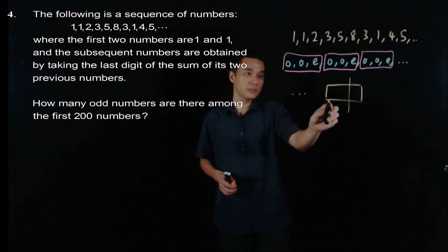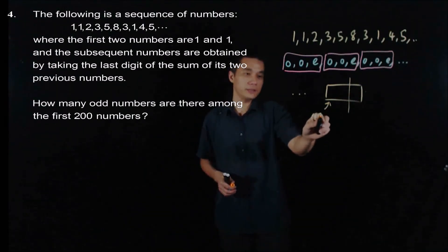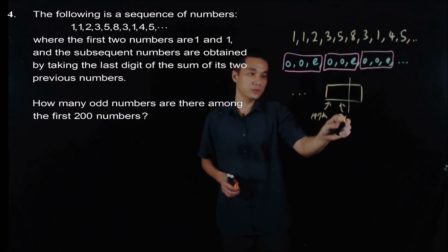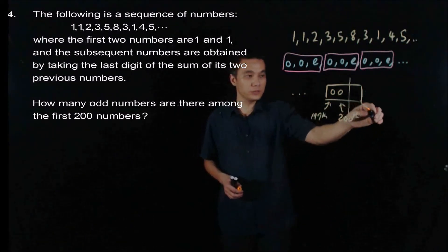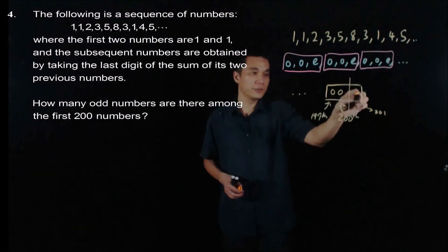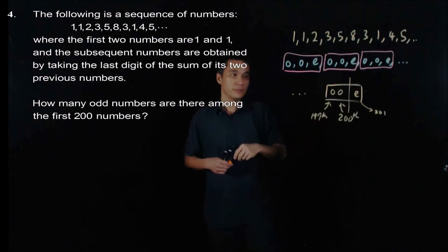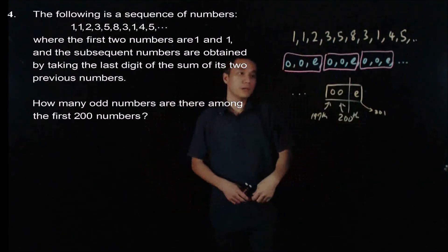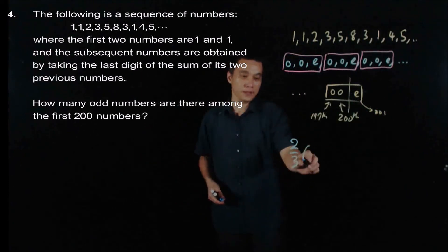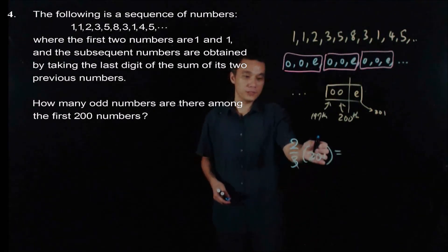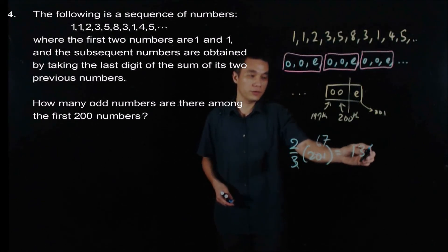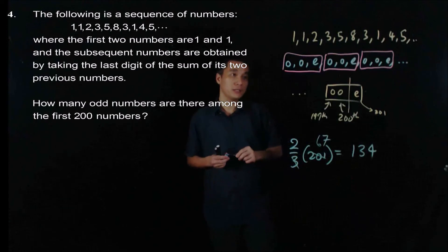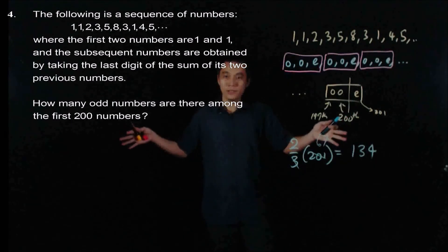So this is the 199 numbers. And this is the 200 digit. And it will be 0. If we include 201 here, it will be even number. So the total number is equal to 2/3 times 201. And if you cancel this, you will have this is 67. And this will be 2. So it's 134 odd numbers in the first 200 numbers.